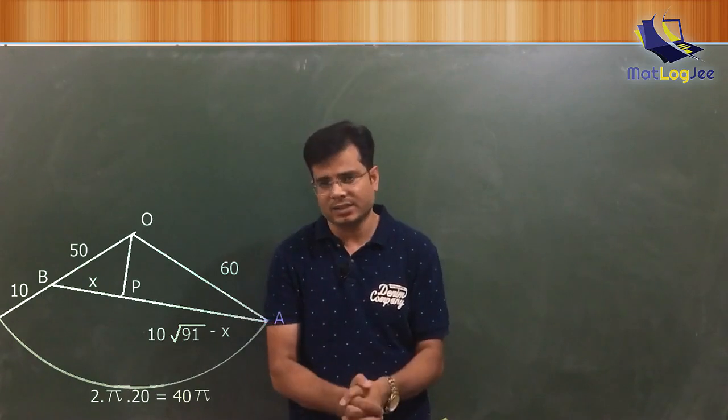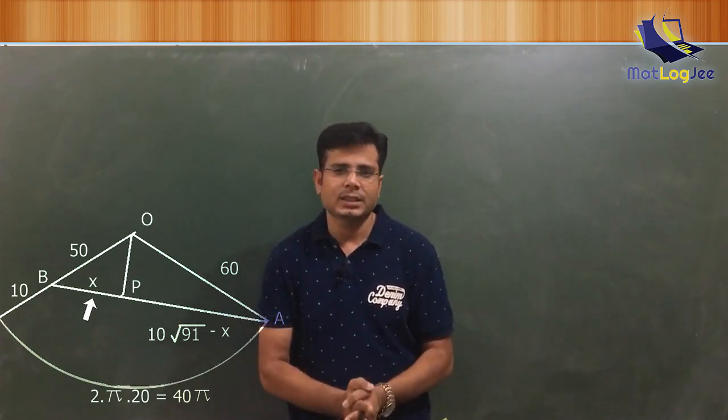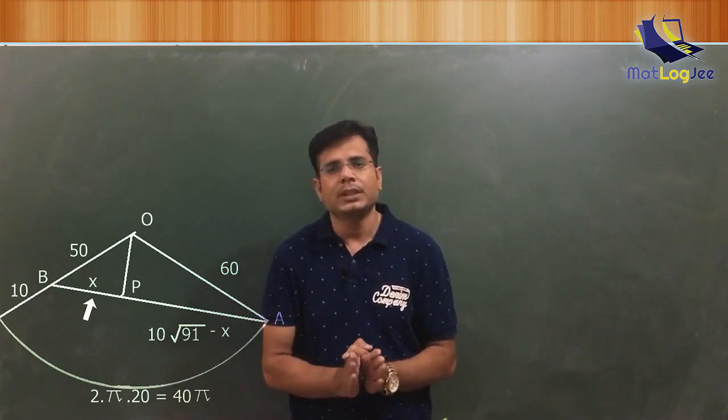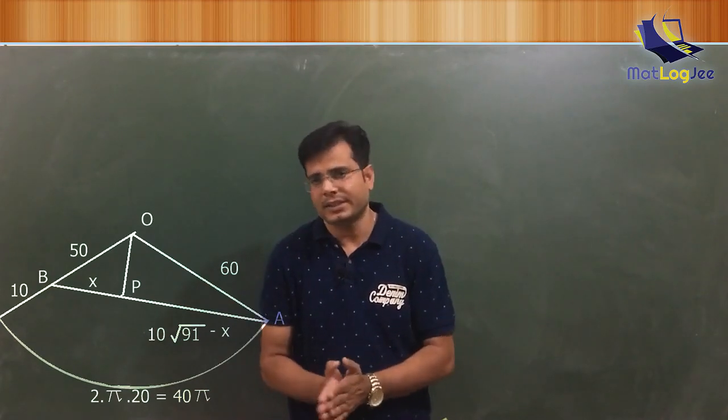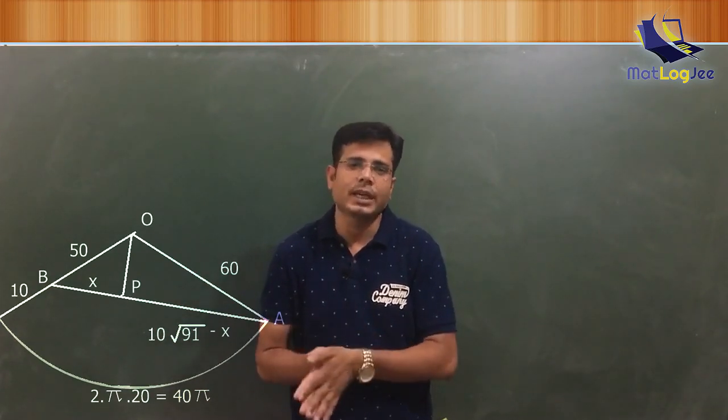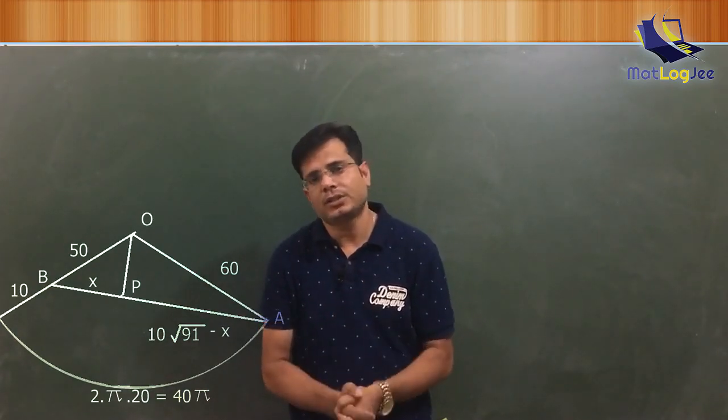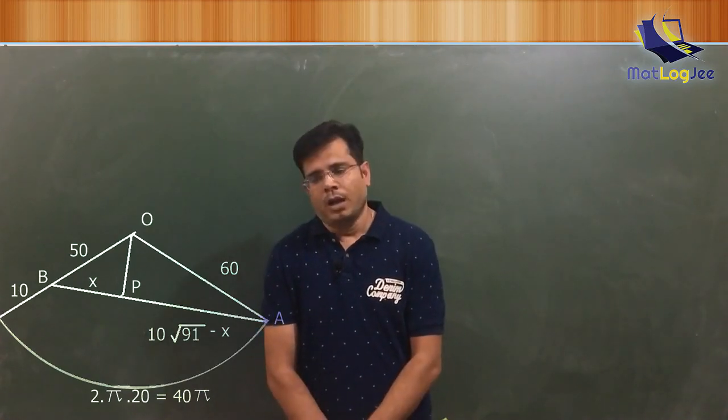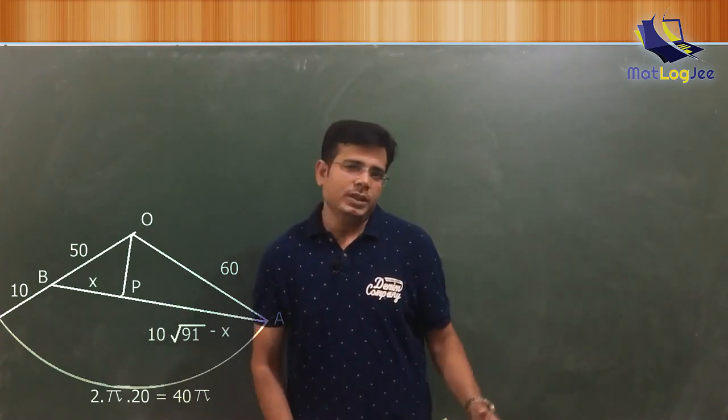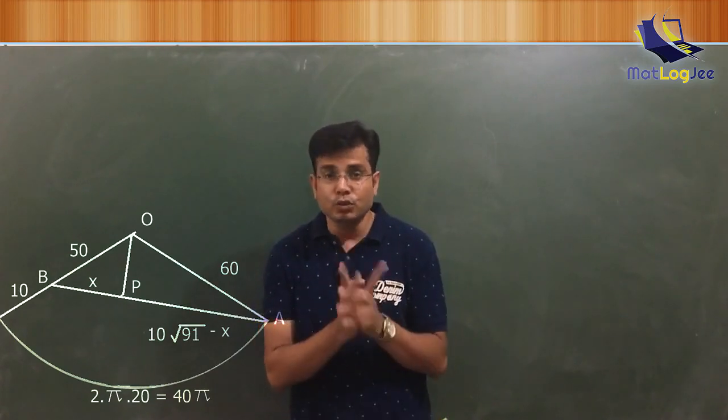So basically we have to find the length PB. So let me take this length as X. If PB is X, then AP will be 10√91 minus X, as we have already calculated AB as 10√91.